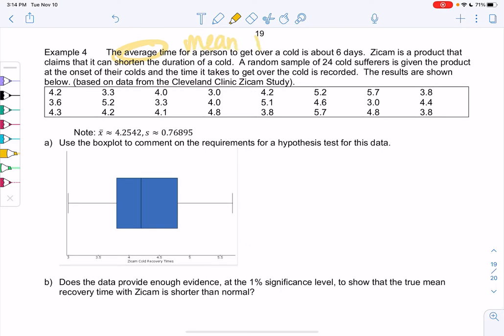These are things I just want to think about right away so I don't mix and match formulas. The average time for a person to get over a cold is about six days. So that sounds like a claim value to me. And then this medicine, Zycam, is a product that claims it can shorten the duration of a cold.